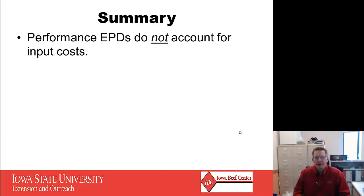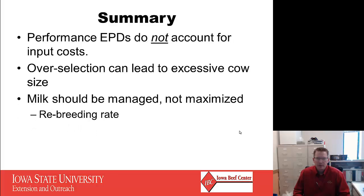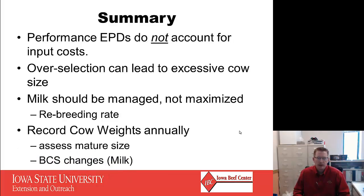In summary, performance EPDs do not account for input costs, so over-selection can be dangerous to your feed bill and can lead to excessive cow size. Milk on its own should be managed, not maximized — over-selecting for milk can harm rebreeding rate, which is much more profitable than a few extra pounds of milk. A good practice is to record cow weights annually as a way to assess mature size and milk production based on body condition score changes, giving you a solid measure of how your cow herd is tracking over time.